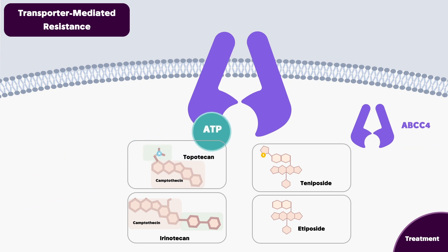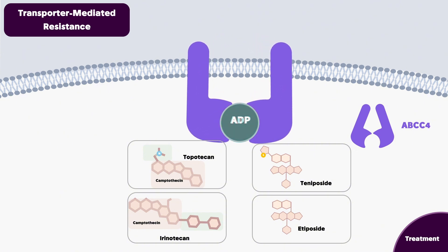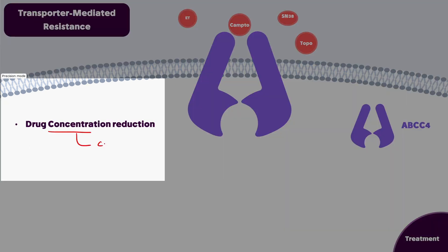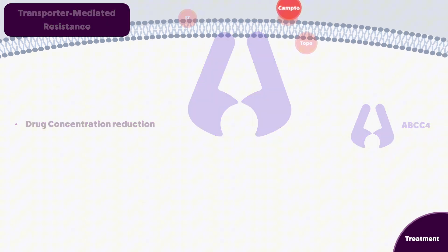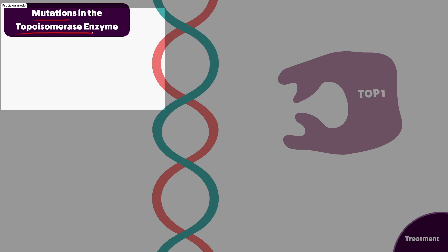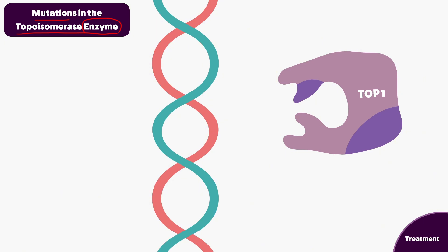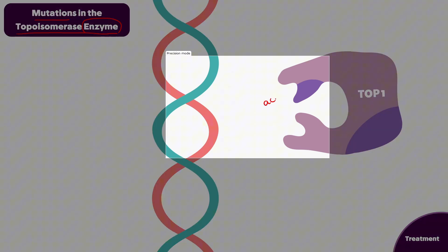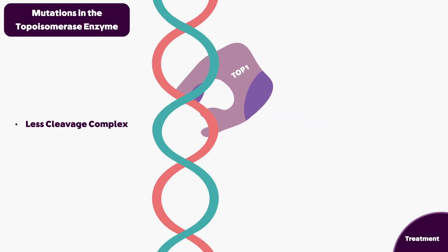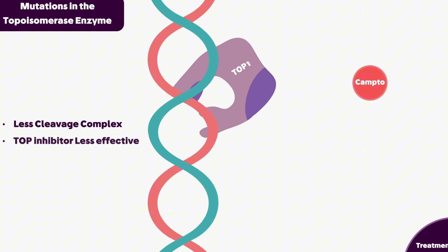Another type of resistance in cancer cells is mediated by ABC transporters, which act in the presence of ATP to channel these drugs out of the cell, reducing drug concentration inside the cancer cells. The last potential resistance mechanism is based on mutations in the topoisomerase enzyme itself — for example, topo 1 can have mutations in the active site or allosteric site that decrease formation of the cleavage complex or decrease drug-binding affinity, making topo inhibitors less effective.